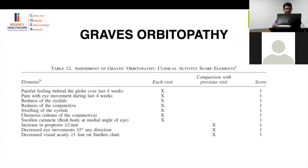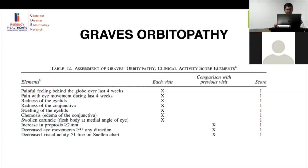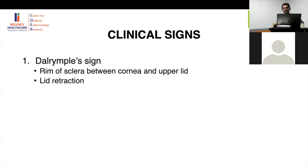Regarding orbitopathy — due to antigenic similarity, retroorbital tissue can be invoked by the TSH receptor antibody. At every visit, ask whether the patient has a painful feeling behind the globe, pain with eye movements, redness of the iris or conjunctiva, or swelling or edema of the conjunctiva. If something is found, refer to an ophthalmologist. On follow-up, if proptosis increases more than 2 mm, eye movement worsens more than 5 degrees, or visual acuity drops by more than 3 lines, this is considered active orbitopathy.